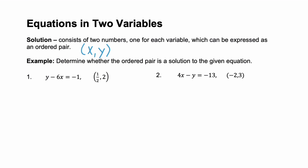Here we have the equation y minus 6x equals negative 1, and we're given the ordered pair (1/2, 2). So 1/2 is our x value and 2 is our y value. We plug those values in for x and y, giving us 2 minus 6 times 1/2 equals negative 1. Now we want to check that this actually equals negative 1 — if both sides are equal, then this ordered pair is in fact a solution.